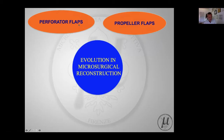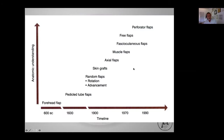In my opinion, in the past 20 years, these are the real new things which have been proposed in the literature: perforator flaps, propeller flaps, and chimeric flaps. Talking about perforator flaps, we know that as anatomical understanding increases, new options and new technology come out.